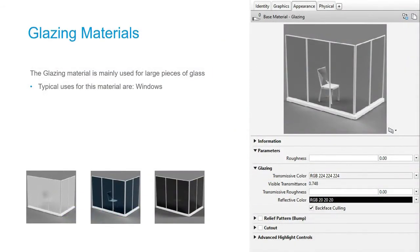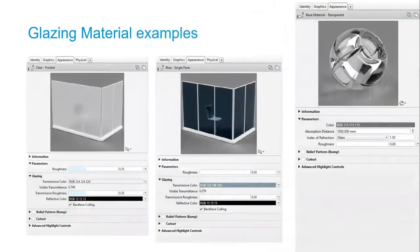Last up is the glazing materials — a little bit different from the transparency materials. Glazing materials are used for big panels of glass, like windows. Here are a couple of materials that were created: we can see it's already dialed in for transmissive roughness, all we have to do is change the color and roughness a little bit. Most of the time you can go to the manufacturer's website and they'll tell you some of these values, so you can just go plug them in.